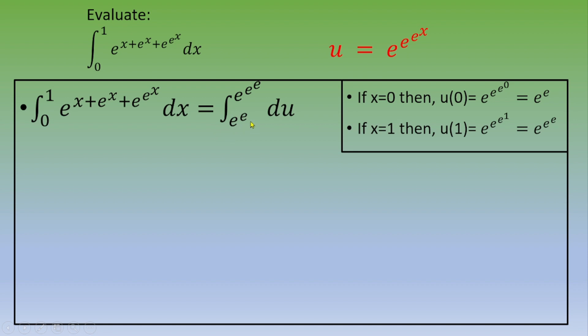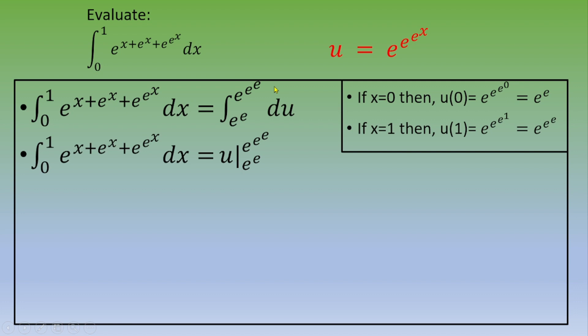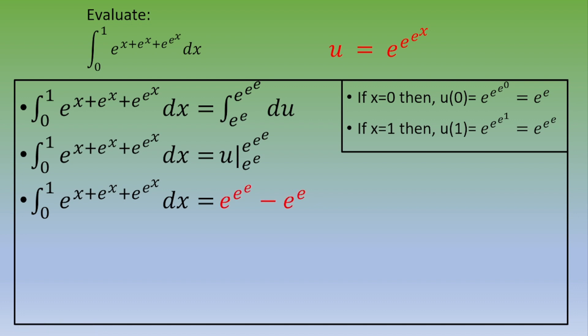Now we can calculate the integral, which becomes the integral from e to the e to e to the e to the e of du. Since u is an antiderivative of du, we evaluate and obtain e to the e to the e minus e to the e as the final answer. Thanks for watching this video, and I hope to see you in the next one.